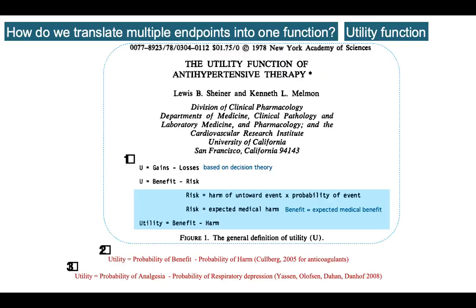Moving back to the literature, we started looking at what we call the utility or safety function. It comes from the decision sciences family and is used in multiple facets of science — including economics. In economics, it's quite clear how it works: you have a probability of benefits. For instance, if you buy bread, the benefit is that you survive, but the harm is that it costs you money.